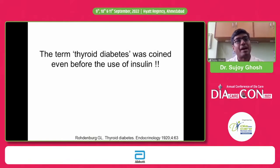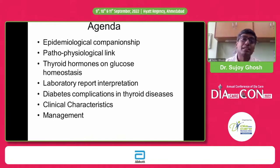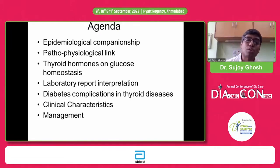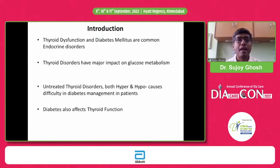People knew that thyroid disorders could actually lead to diabetes. That means diabetes secondary to hyperthyroidism was already described even before insulin was discovered. I'll talk a little bit about the pathophysiological link, the basic relationship between thyroid hormones and glucose homeostasis, how to interpret blood test reports, what complications of diabetes and thyroid disorders go hand in hand, and certain bits about the clinical characteristics and management of this concurrent problem.